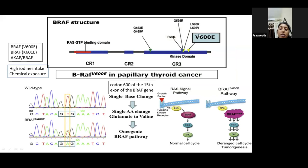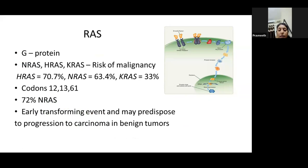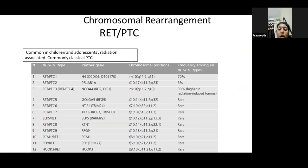There is a strong association of BRAF mutation with high iodine intake areas and chemical exposure. The RAS gene is a G-protein. The types of RAS involved are N-RAS, H-RAS, and K-RAS. Among these, N-RAS is most important at 72%, and risk of malignancy is higher with H-RAS. When RAS is found in a tumor, it signals progression from a benign tumor to a carcinoma, especially in the case of follicular carcinoma.